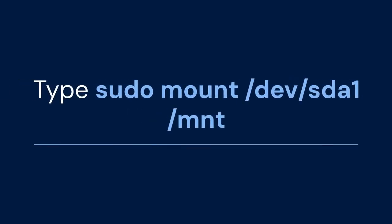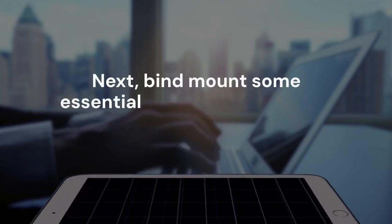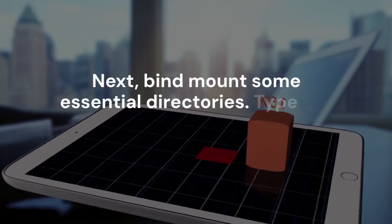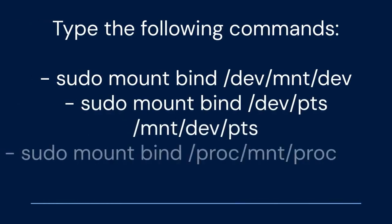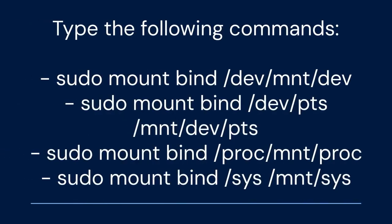Now, mount your Zorin OS partition — replace /dev/sda1 with the actual device name of your partition. Type: sudo mount /dev/sda1 /mnt. Next, bind mount some essential directories by typing the following commands, pressing Enter after each: sudo mount --bind /dev /mnt/dev, sudo mount --bind /dev/pts /mnt/dev/pts, sudo mount --bind /proc /mnt/proc, sudo mount --bind /sys /mnt/sys.